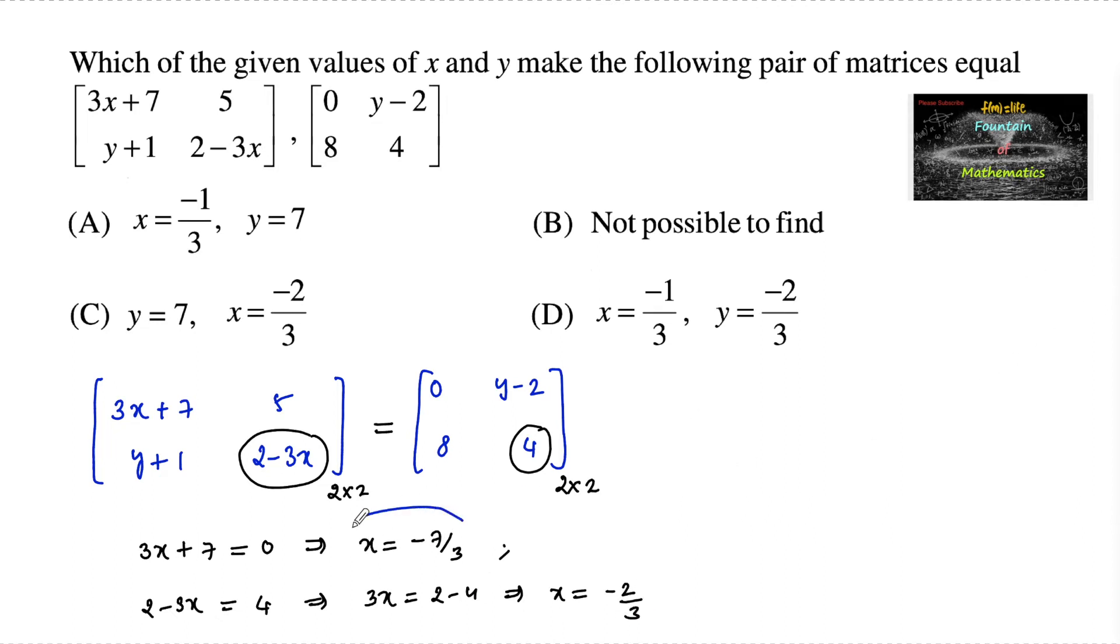Here we are getting two different values of x: minus 7 by 3 and minus 2 by 3. So we can say that these two matrices cannot be equal with these values.